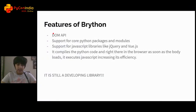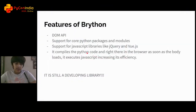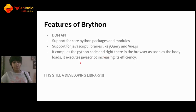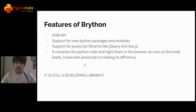Brython has an excellent DOM API — we looked at that. It has support for core Python packages and modules, including json which we also imported. It also supports JavaScript libraries like jQuery, Vue.js, Phaser.js, and others. You can find the full list in the Brython documentation. It compiles the Python code right there in the browser as soon as the body loads.